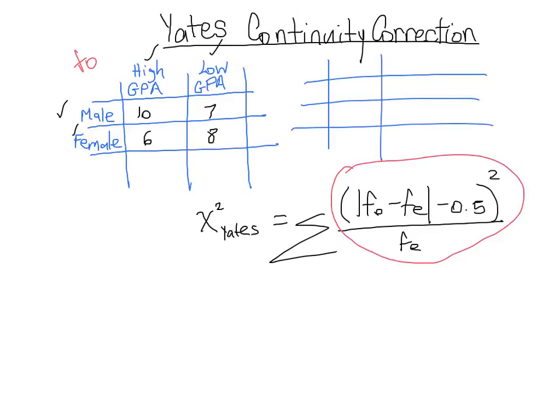Again it would be high GPA, low GPA, male and female, just like our observed frequency table. And of course we know we need the sums in order to find our fe values: 16, 15, 31, 17, and 14. So we just added everything up to get our sums.